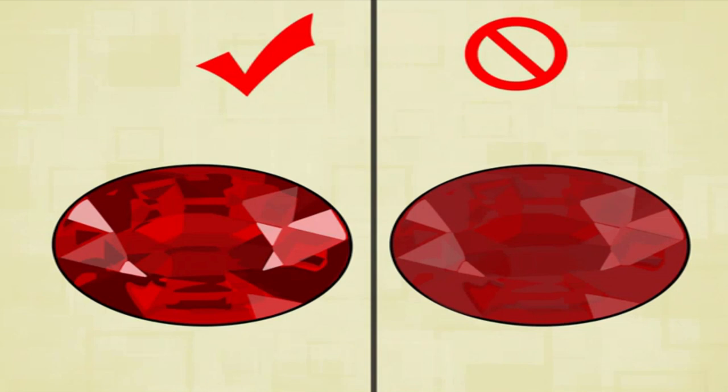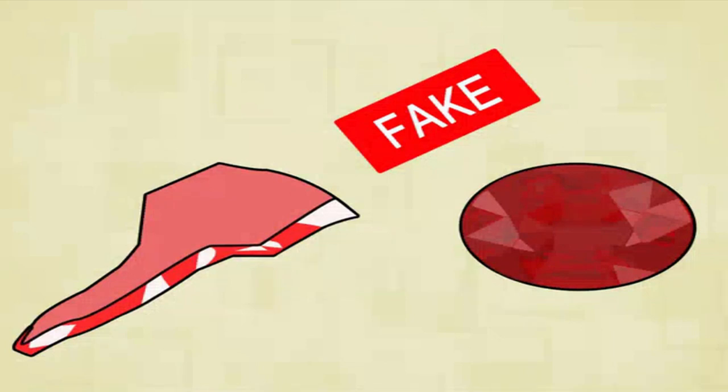Compare the ruby stone to a shard of red glass. Rubies and other varieties of sapphire are often faked as glass. If the glass and stone look similar, then you may just be holding two pieces of red glass.